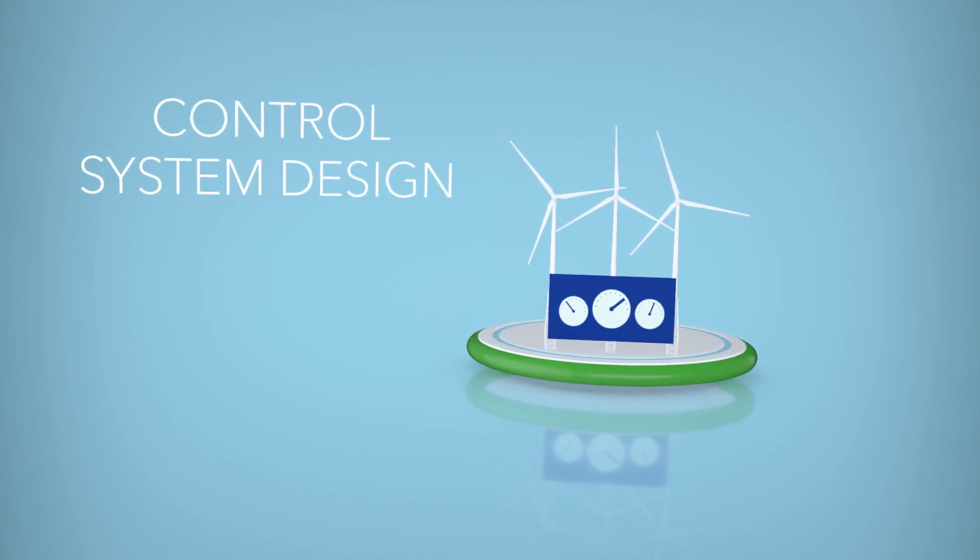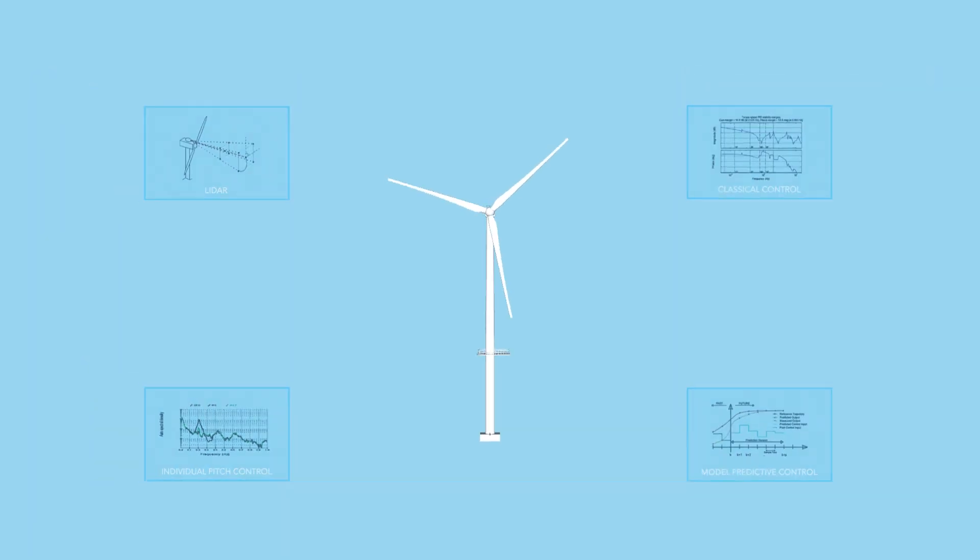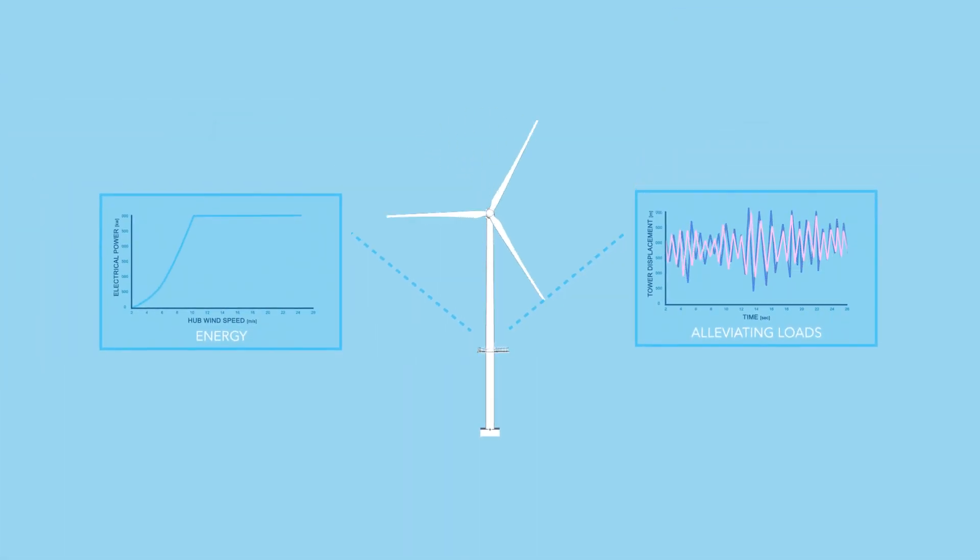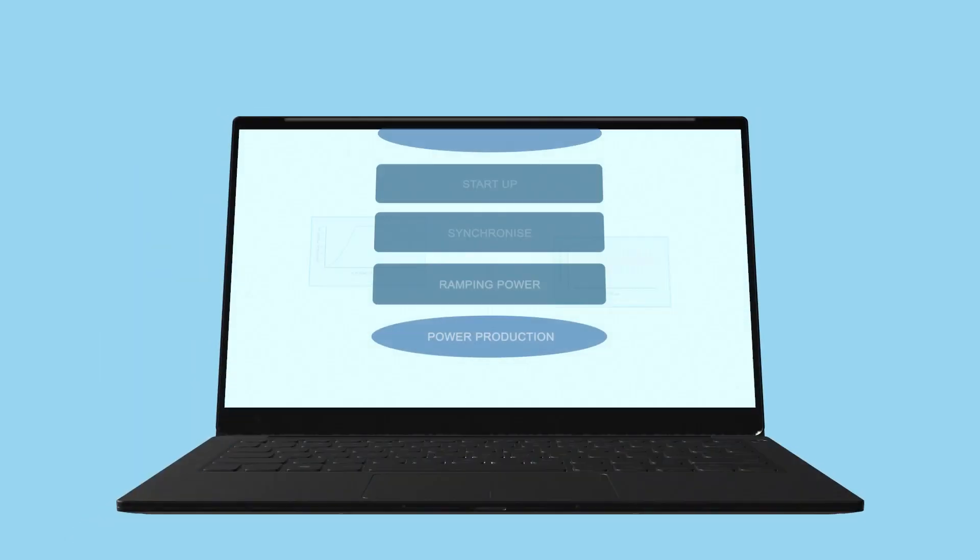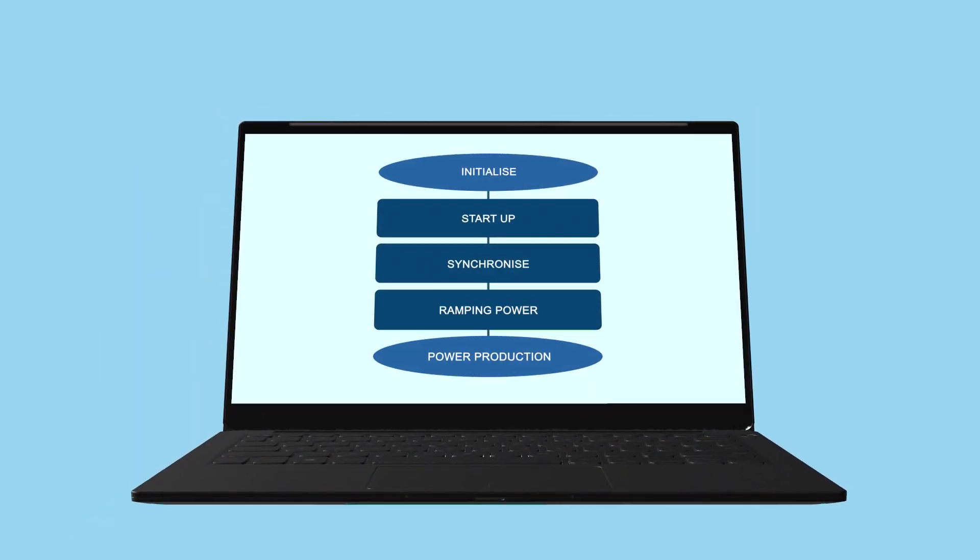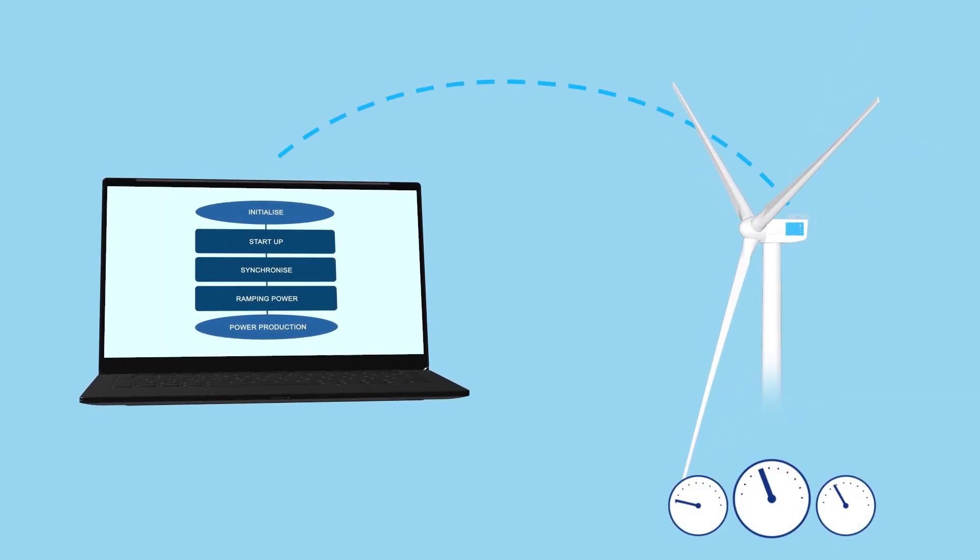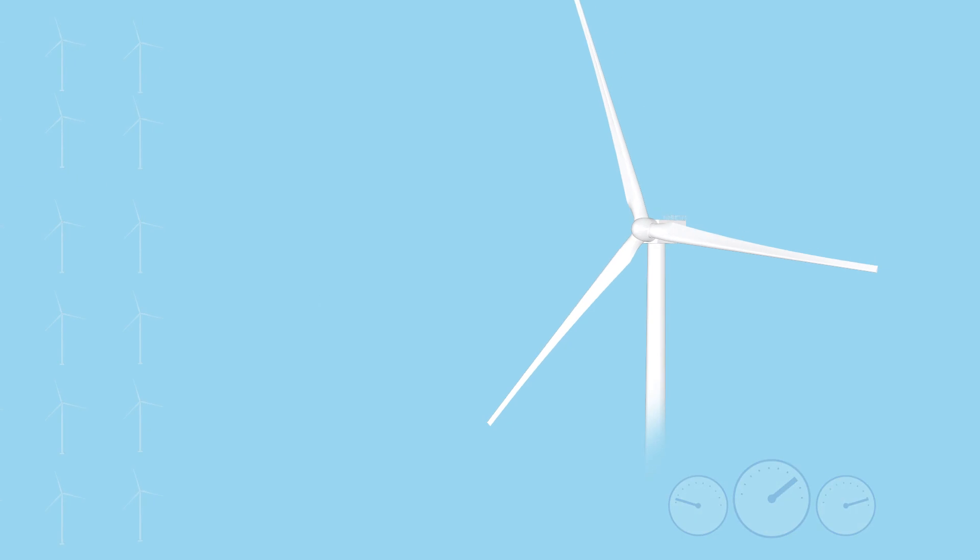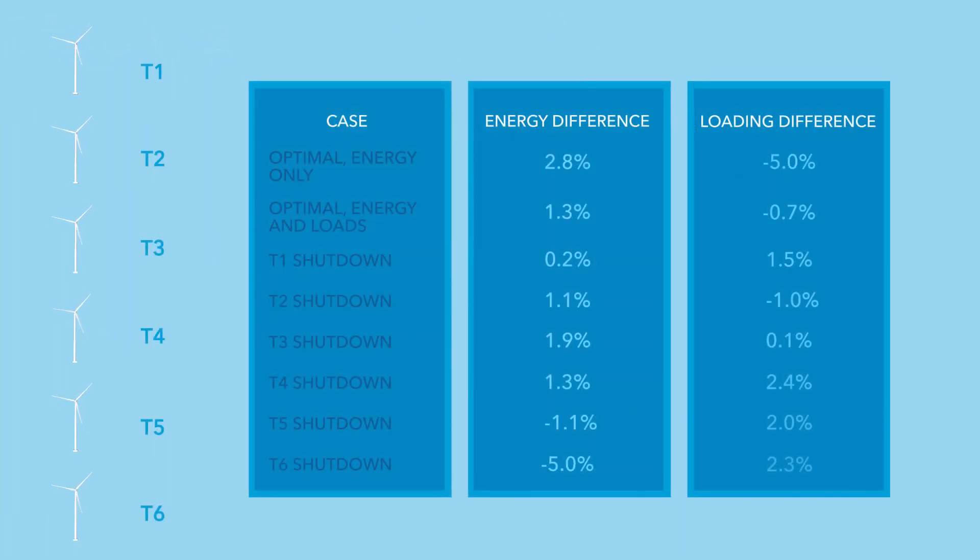Our control engineering team designs the algorithms to control how wind turbines behave, maximizing energy production while alleviating structural loads. Our control services extend from the algorithm design phase, through software implementation, to testing and commissioning. Historically, turbines have been operated as individual units, but our advanced methods allow wind farms to be controlled as integrated power stations, maximizing system performance and grid integration.